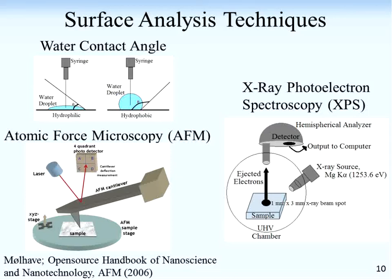Finally, there's X-ray photoelectron spectroscopy, or XPS. This is a quantitative elemental analysis technique — it tells you what elements are present in your surface and in what concentrations. You irradiate a surface with X-rays that knock electrons out of the surface; the electrons come out with a distinct kinetic energy equal to the energy of the X-ray minus the binding energy for the orbital the electron came from. It's sensitive only to the top few nanometers of a surface — about five to ten nanometers — so it's a true surface analysis technique.